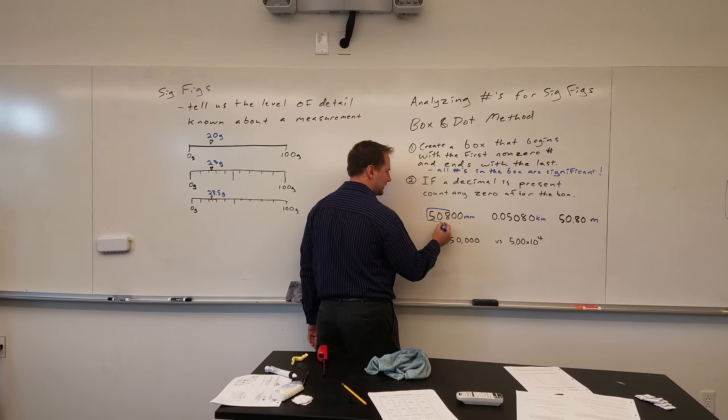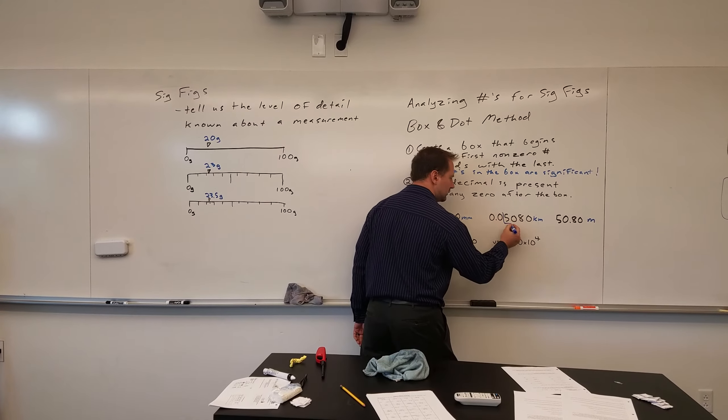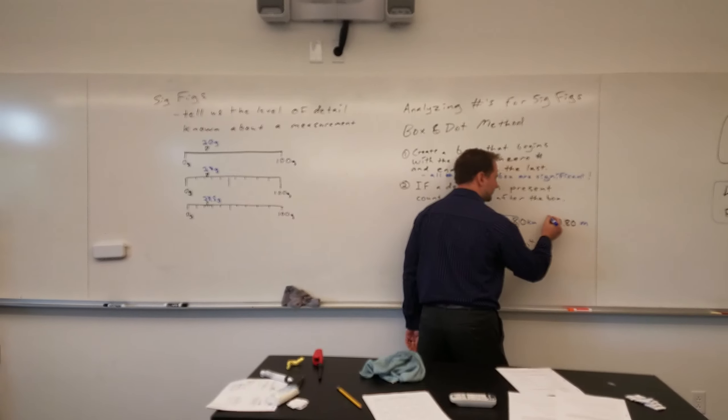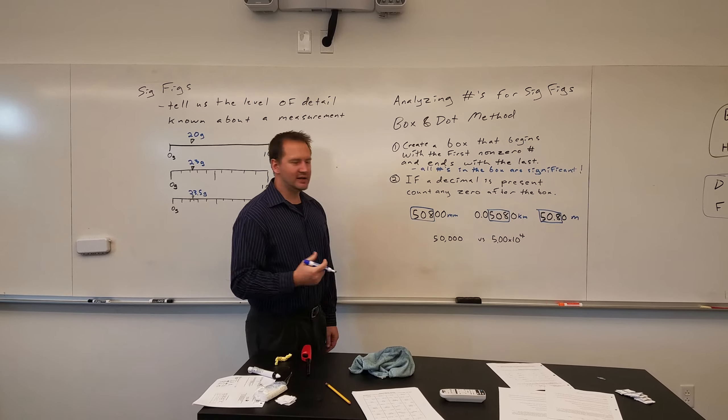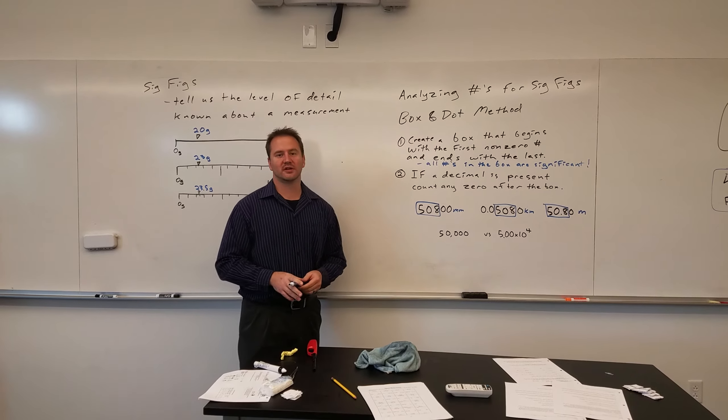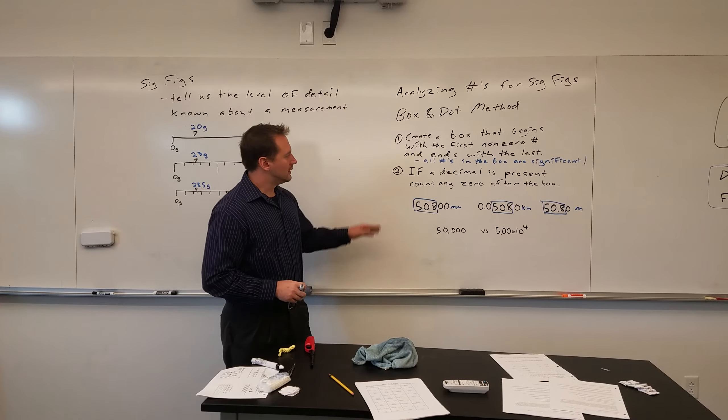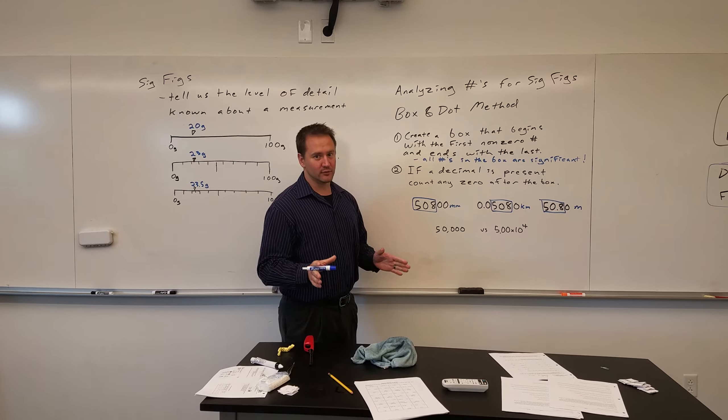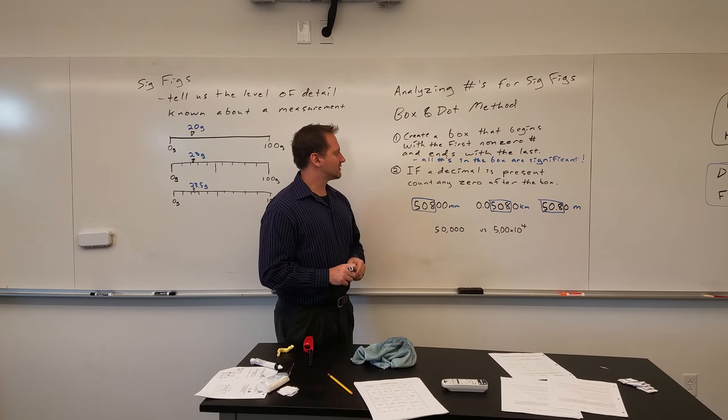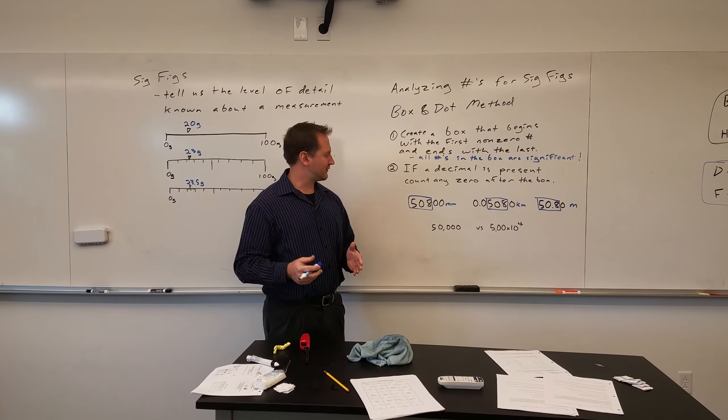First non-zero and last, boom, boom, boom. So anything in there, they all have at least three significant figures within the measurement. Now the second rule, and there's only two, which is nice because the other rules are like five. If a decimal is present, count any zero after the box.